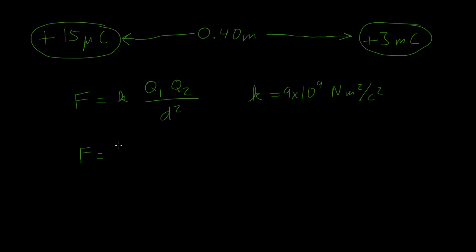So we just need to plug in our numbers. 9 times 10 to the ninth newtons meters squared per coulombs squared. That's k. Times q1, which is 15 times 10 to the negative sixth coulombs, that's this first charge.